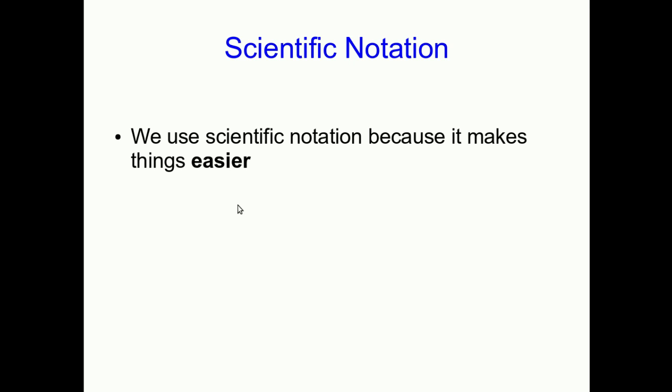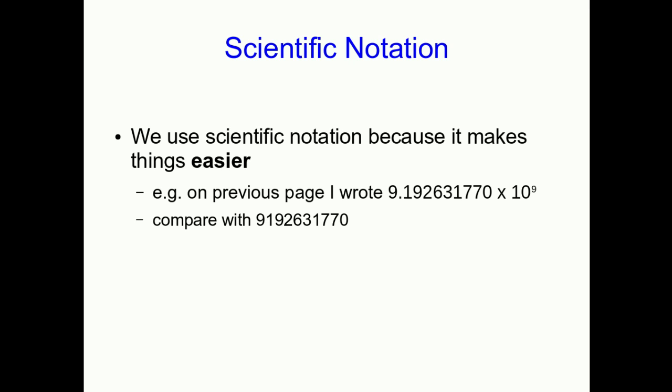Perhaps you don't feel that scientific notation is easier, but in fact we use scientific notation because it does make things easier. So just for example, on the previous page I wrote this number. Compare that with if I had written this. That may look more comfortable to you, but realize that when you start reading it and you read that nine, you don't know what that nine means until you count digits and you see that there are nine digits following it, and so it's in the billions place. Whereas when we write it in scientific notation, the order of magnitude is right there, easy to see. You don't have to go counting digits.